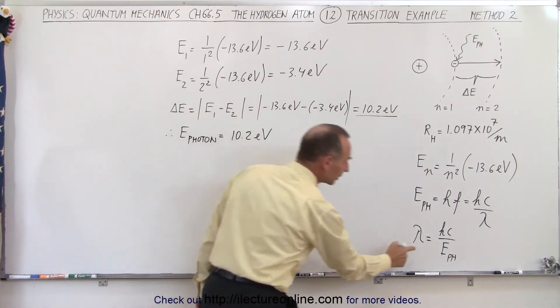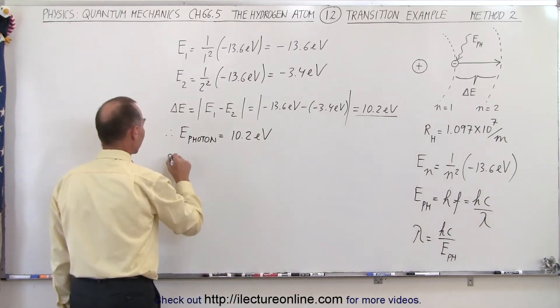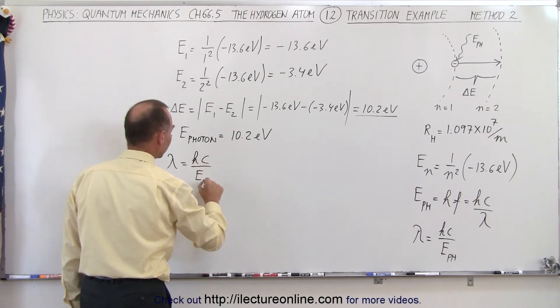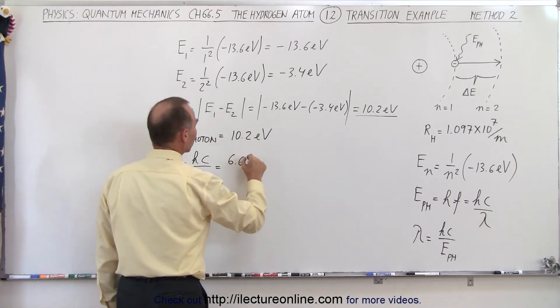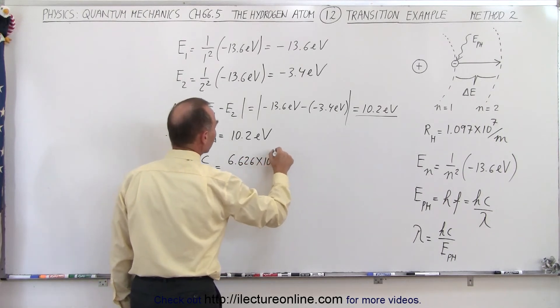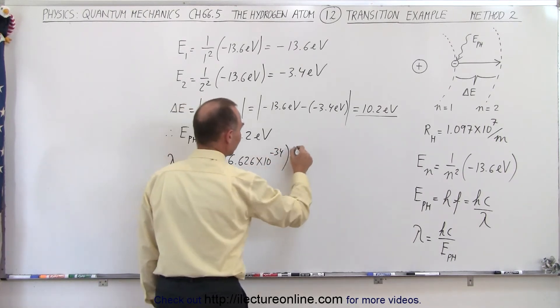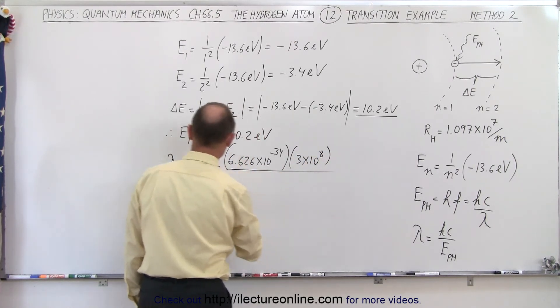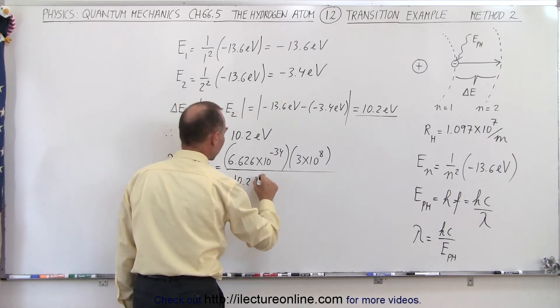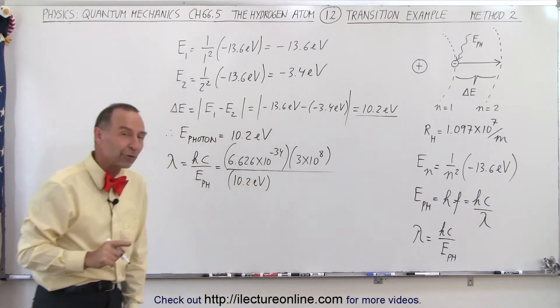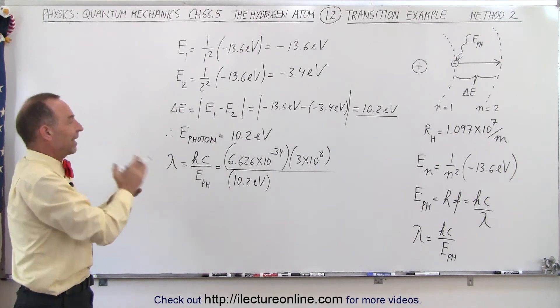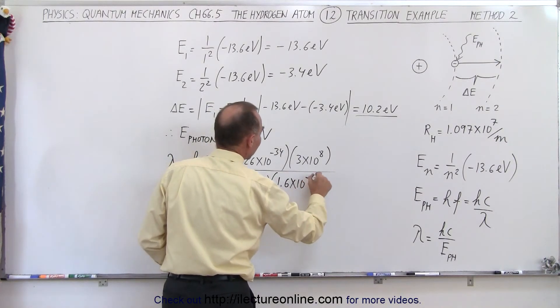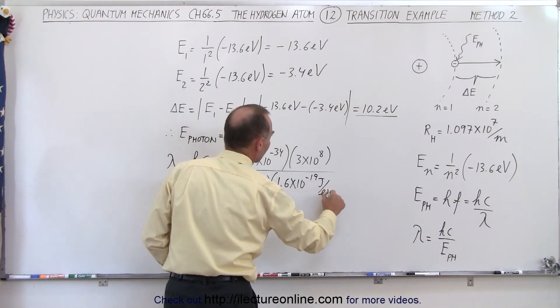So from that, we can calculate the wavelength of that photon. So the wavelength is equal to hc divided by the energy of the photon, which is equal to 6.626 times 10 to the minus 34 joules times seconds, speed of light 3 times 10 to the 8 meters per second, divided by the energy of the photon, 10.2 electron volts. The reason why I put the units electron volts there is because it's not a standard unit. We have to convert that to joules, and the conversion is 1.6 times 10 to the minus 19 joules per electron volt.